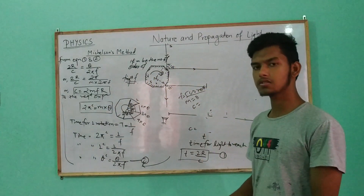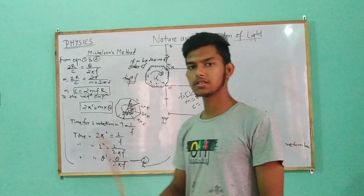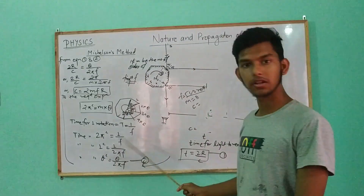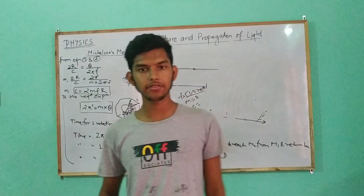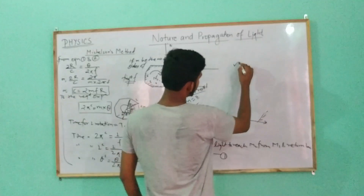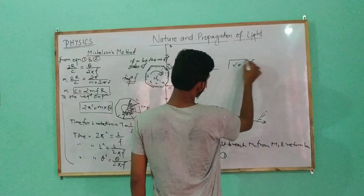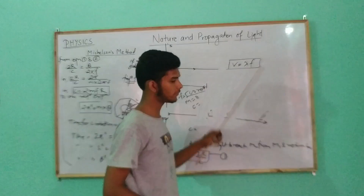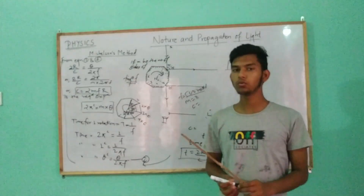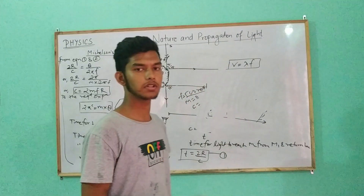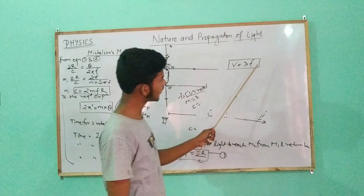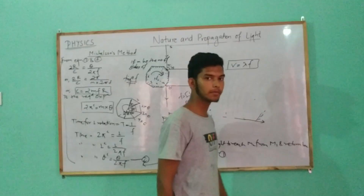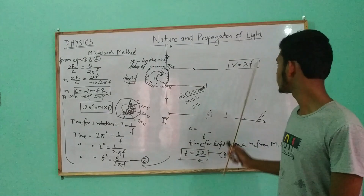Which of the following parameters does not change when light travels in a medium? The velocity changes. Using v equals lambda times f, the wavelength will change. But frequency is a fundamental property that does not change — frequency will not change.